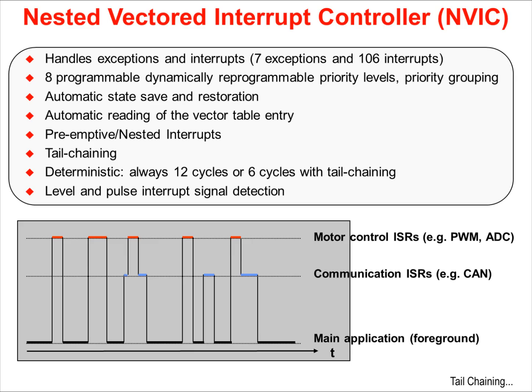Interrupts can also be tail-chained, which I'll explain in the next few slides. Interrupts are deterministic — they're always either 12 cycles or 6 cycles if they're tail-chained.